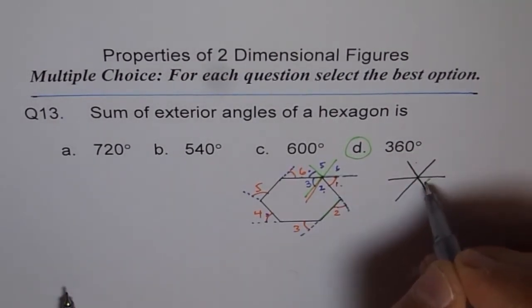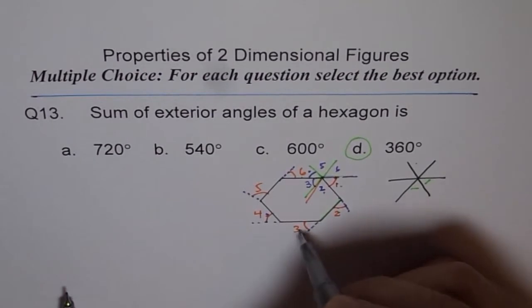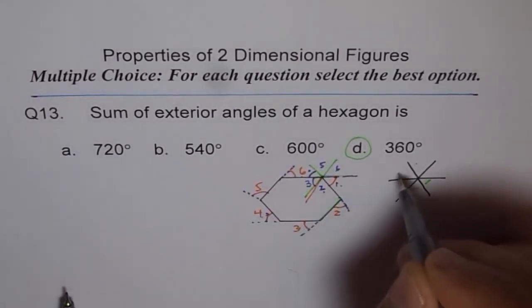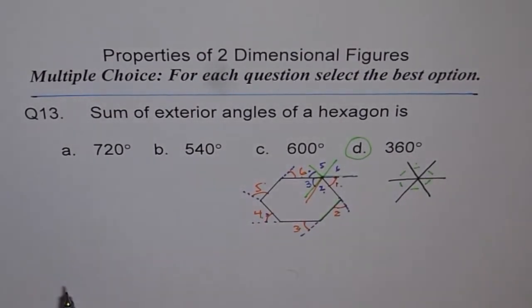You started from here - angle 1, this is angle 2, this is angle 3, this is angle 4, this is angle 5, and this is angle 6. So what you see is for any polygon.